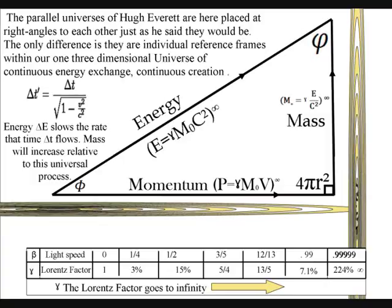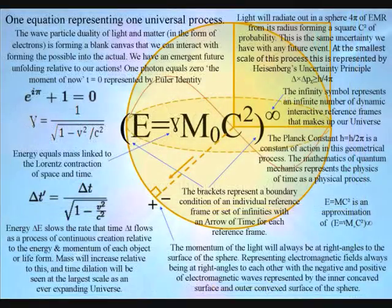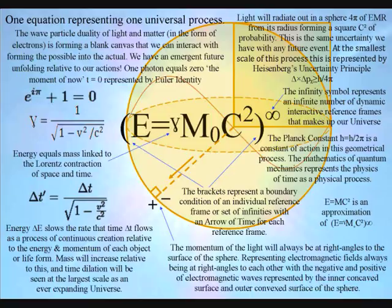In physics, spacetime is any mathematical model that combines dimensions of space and time in a single continuum. This geometrical process can be represented by just one equation, with the Lorentz contraction of space and time being placed between the energy and mass of Einstein's famous equation.